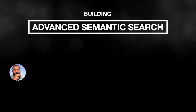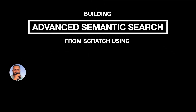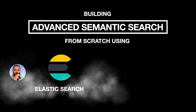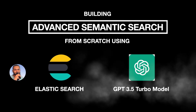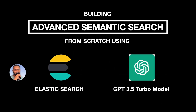In this video, we are going to build an entire advanced semantic search from scratch using the new updated Elasticsearch 8.11. We are also going to use GPT 3.5 Turbo models and OpenAI embeddings. First we will see how advanced semantic search differs from normal semantic search, then we will see the complete architecture of the code, and at the end we will do the coding.